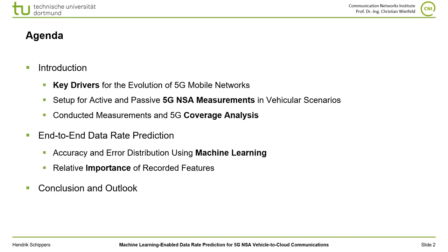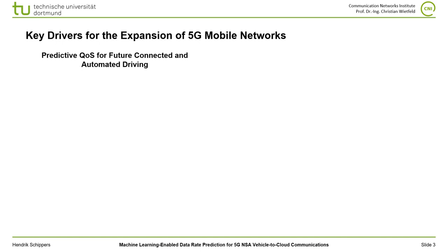My talk is structured as follows. Firstly, I am going to give a brief introduction about the key drivers of the expansion of 5G mobile networks and our measurement setup. After a short coverage analysis, I am going to present our data rate prediction results including accuracy, error distributions, and the feature importance of individual measured signals. Finally, my presentation is concluded and an outlook is given.